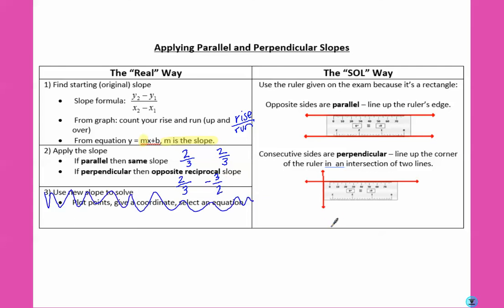The other way is to help use your ruler, because it's a rectangle. So the opposite sides are parallel, and the corners are perpendicular. So using the corner will help you find a perpendicular line, and using opposite sides can help you find a parallel line. So let's see how that can help.